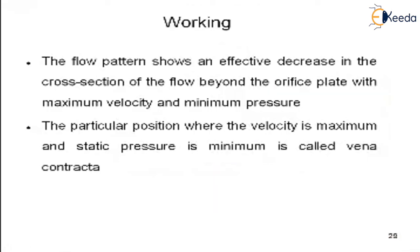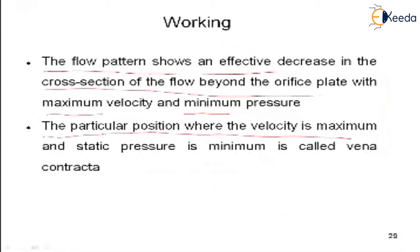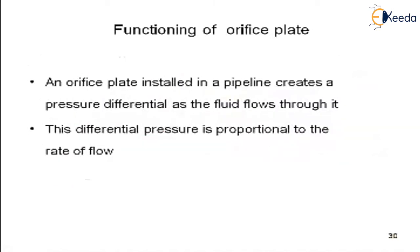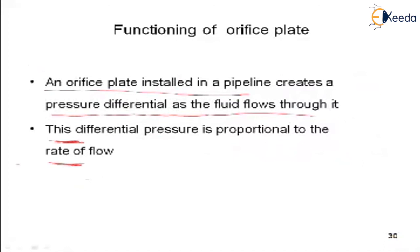The flow pattern shows a decrease in the cross-section of flow beyond the orifice plate, with maximum velocity and minimum pressure. The position where flow velocity is maximum and static pressure is minimum is called the vena contracta. This orifice plate, installed in the pipe, creates a pressure differential as fluid flows through it, and that differential pressure is proportional to the rate of flow.